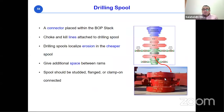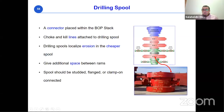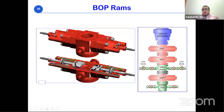Within the BOP stack, the drilling spool is positioned between the rams and provides connection ports for the choke line — which routes well pressure to the choke manifold — and the kill line, which allows the pump to inject fluid into the annulus through the drilling spool in order to kill the well.